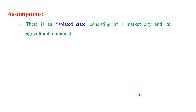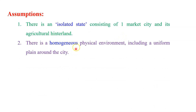We will discuss all assumptions one by one. The first assumption: there is an isolated state consisting of one market city and its agricultural land use — that area should be like an isolated state with one marketplace. The second assumption: there is a homogeneous physical environment, including a uniform plane around the city. With respect to climate, physiography, and all other physical environment, it should be equal everywhere, with a uniform plane around the city.